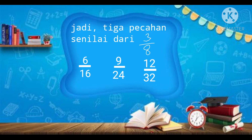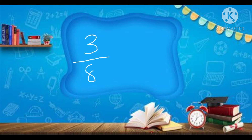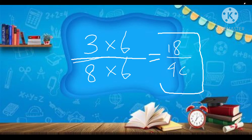Teman-teman, tadi kita hanya mengkalikan pembilang dan penyebut dengan angka 2, 3, dan juga 4. Sekarang, mari kita coba kalikan dengan angka yang lain, misalnya angka 6. 3 per 8: 3 dikali 6 sama dengan 18, dan 8 dikali 6 sama dengan 48. Jadi, hasil dari pembilang dan penyebut 3 per 8 dikalikan dengan 6 sama dengan 18 per 48.